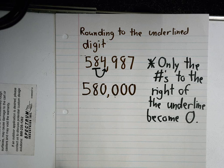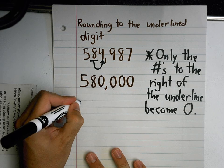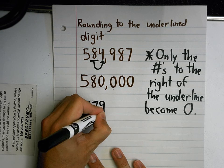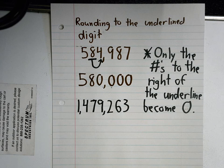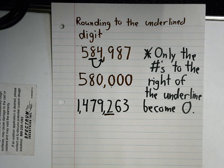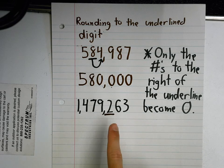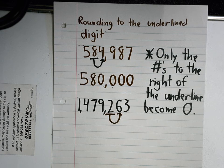Let's try one more. How about 1,479,263? Which place value am I going to round to? The hundreds place — which is the two in this case. I've already underlined it. I have to look at the number to the right. It's a six.